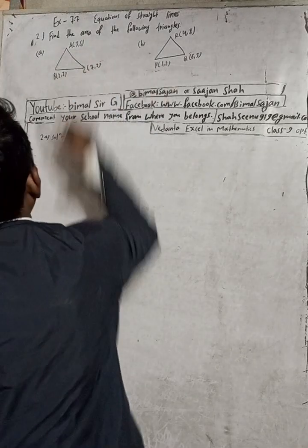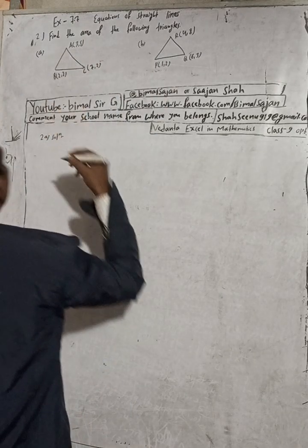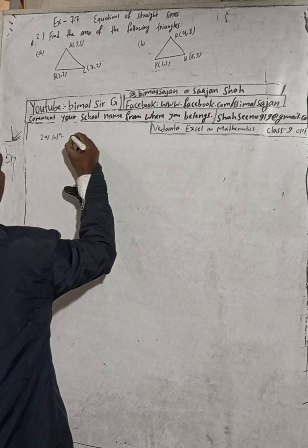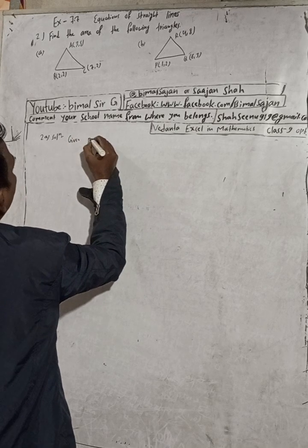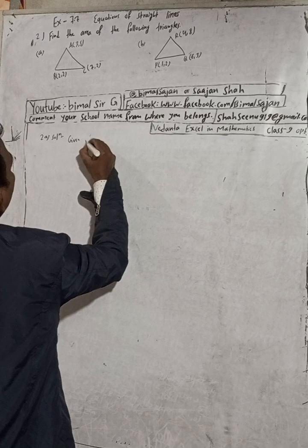The question is here: find the area of the triangle. Given vertices are provided.